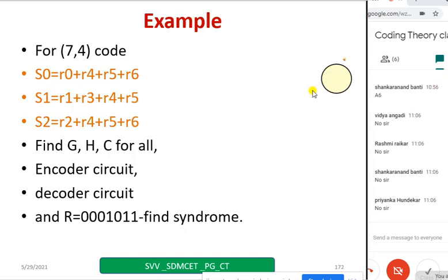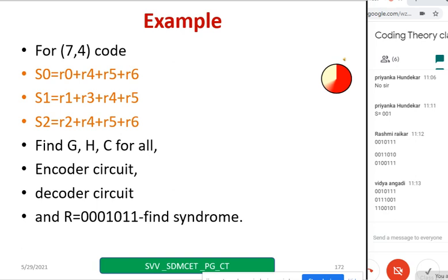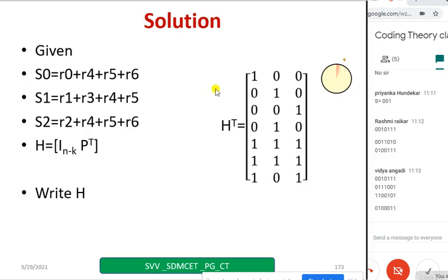For example, for (7,4) code, code word has given by Rashmi. Others say I can do the same data so that you can compare the code words. And syndrome also you can calculate. I think Priyanka got 001. Vidya has also got 111010. Data bits are 001 she has taken 1100. So let this complete as code words. Then complete the encoder. Then go for a syndrome. Then make it as a decoder circuit.